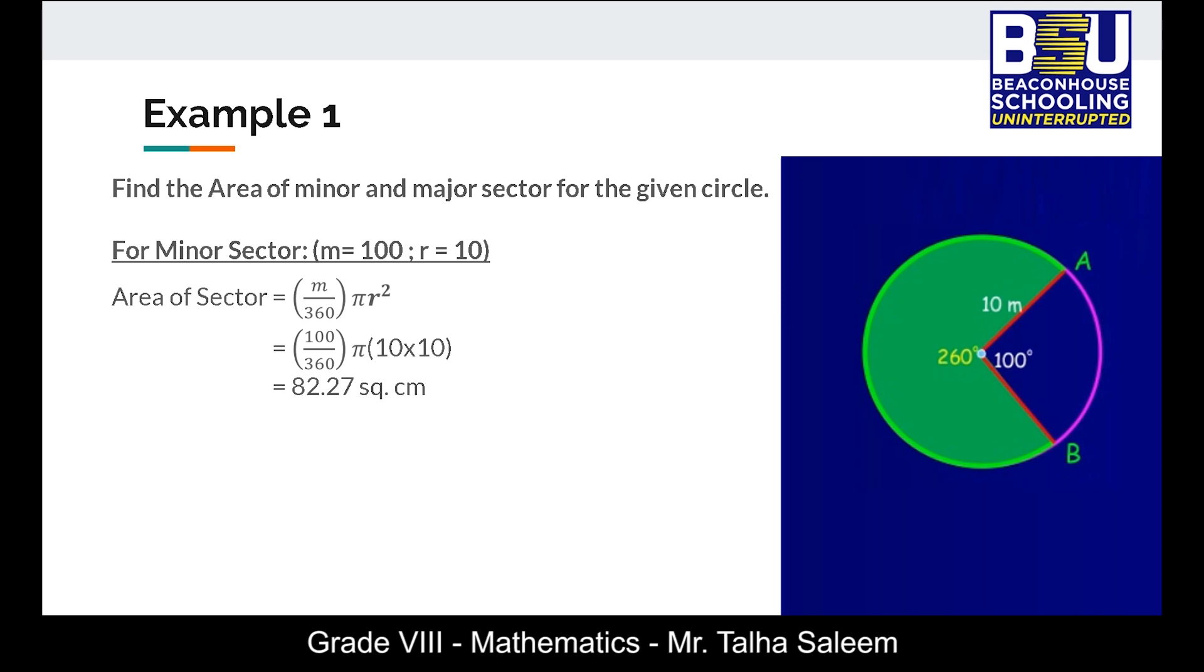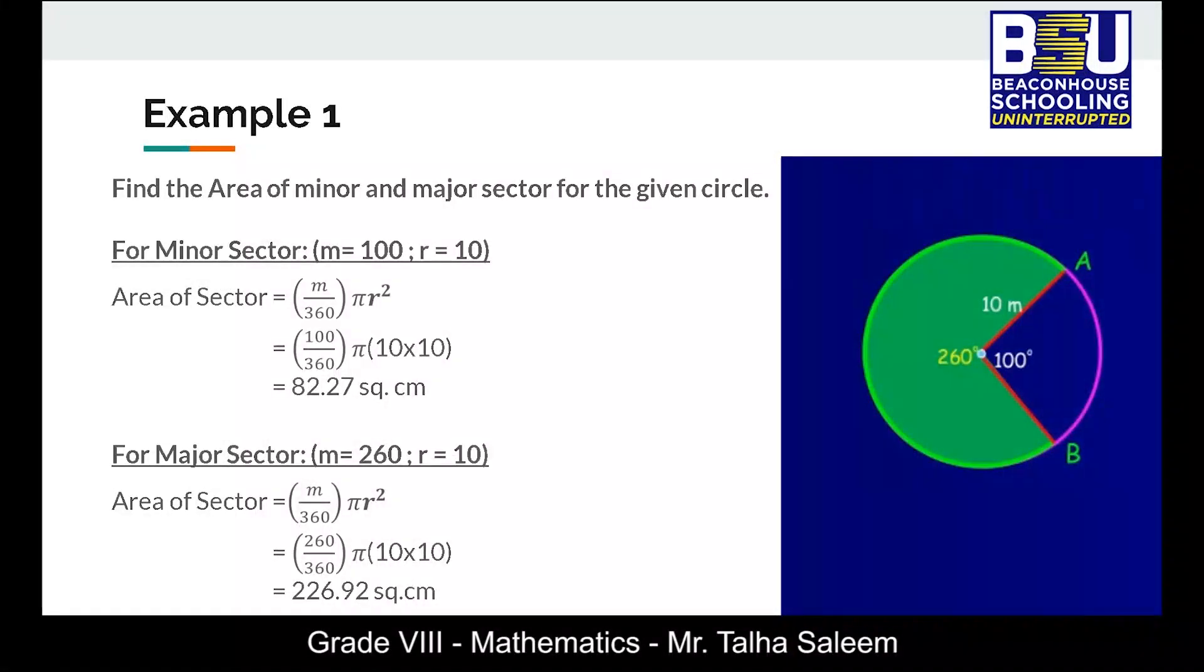Now for major sector, the only thing that will be changed in the formula is the value of m. As you can see in the figure as well that the green colored portion is the major sector and the angle subtended by this sector is 260 degrees. So putting the value of m as 260 and radius as 10, we get the answer for area of sector as 226.92 square centimeters.